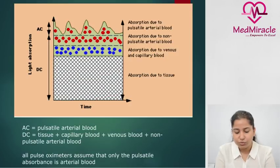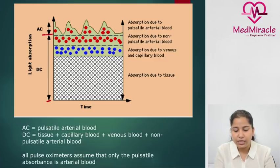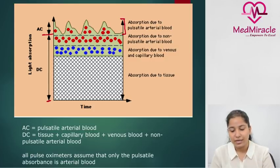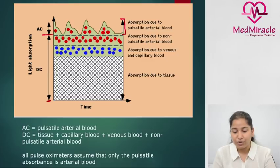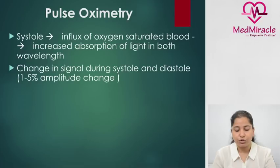Regarding oxygen level in the tissues, there is a pulsatile component and a non-pulsatile component. Pulse oximetry assumes that all blood in arteries is pulsatile, so only the pulsatile part of blood flow is taken as arterial blood and the concentration of oxygen carried by hemoglobin in that part is used for calculation. In systole, there is influx of oxygen-saturated blood into the arteries with increased absorption at both wavelengths. In diastole, there is a slight change in signal of only one to five percent of the amplitude, which does not make a significant change in the SpO2 value.